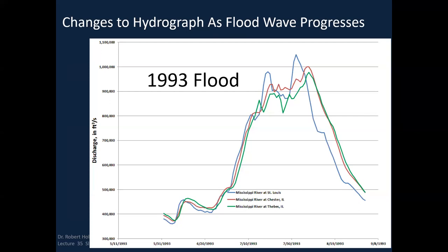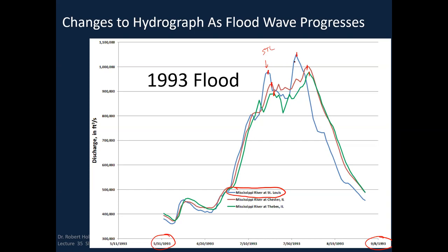Looking at the 1993 flood data: the Mississippi River at St. Louis is shown in blue, covering roughly late May through September 1993 — a long flood with a lot of water. Chester is in red and Thebes is in green. The first thing you notice is that when a particular peak occurs at St. Louis, it's delayed in its occurrence downstream at Chester and then Thebes. You can see this flood wave moving through, cresting at St. Louis before it hits Chester and then Thebes. The same pattern repeats at a secondary crest.